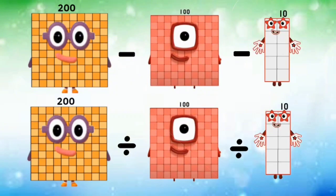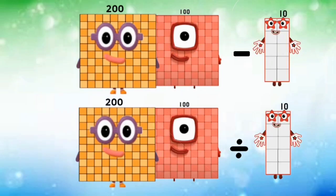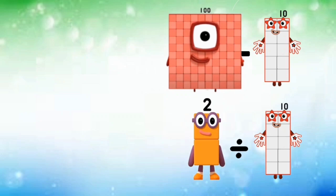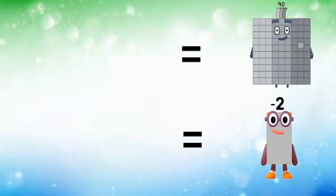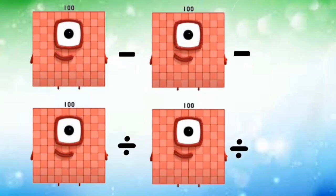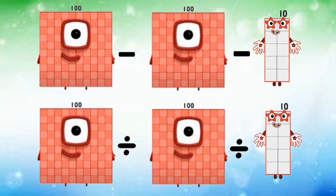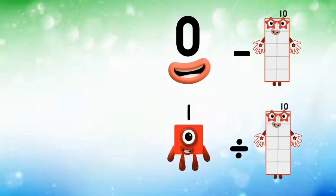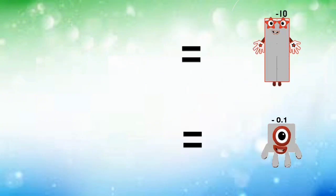200 subtracted and divided by 100 equals 102. 100 subtracted and divided by 100 equals 0 and 1. 0 minus 10 and 1 divided by 10 equals negative 10 and negative 1.